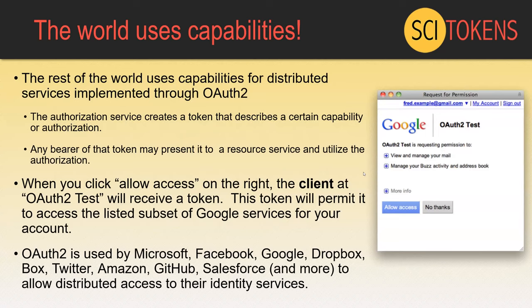We've got a couple of motivations for why we think capabilities are the right way to go for scientific cyber infrastructure going forward. One is that the world already uses capabilities, which brings a lot of benefits. Capabilities are widely used through the OAuth 2 protocol, so users are now familiar with them — familiar with a consent screen that shows a service asking for specific rights. That consent screen shows you're granting a least-privileged set of rights.